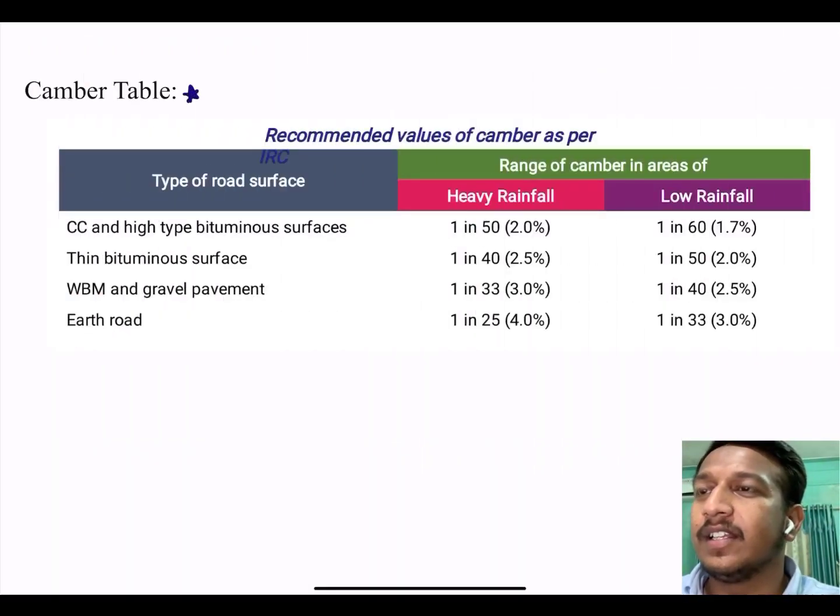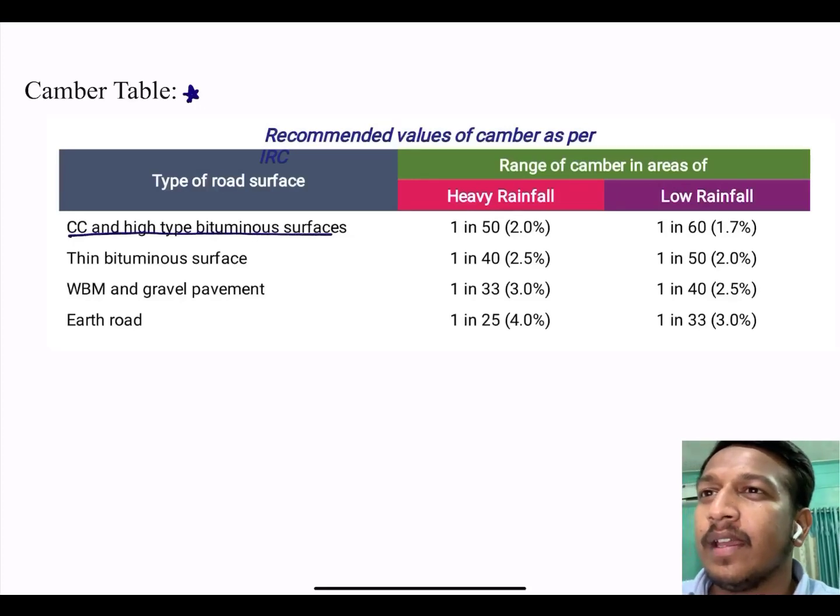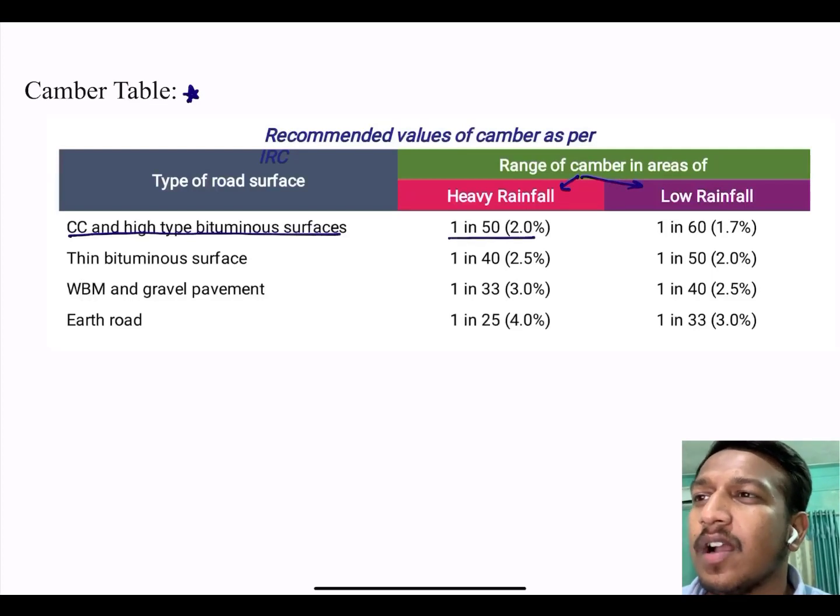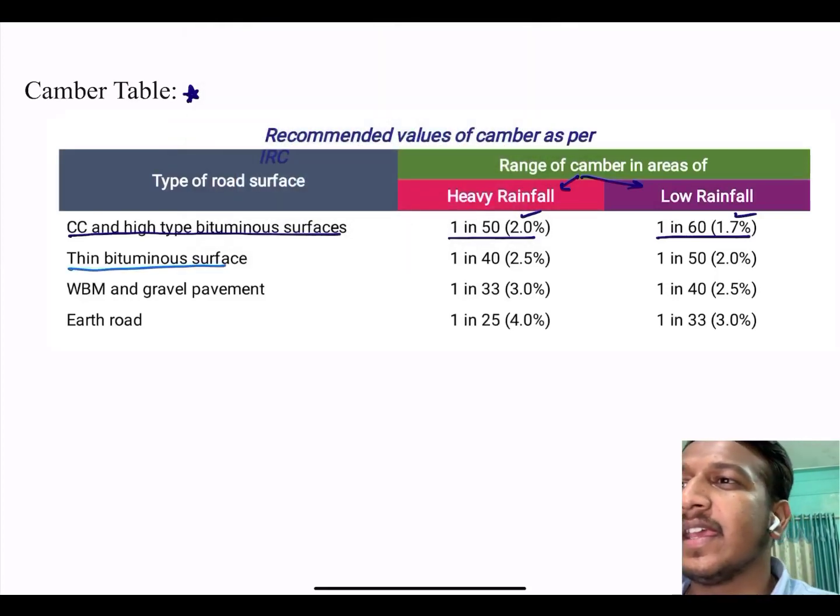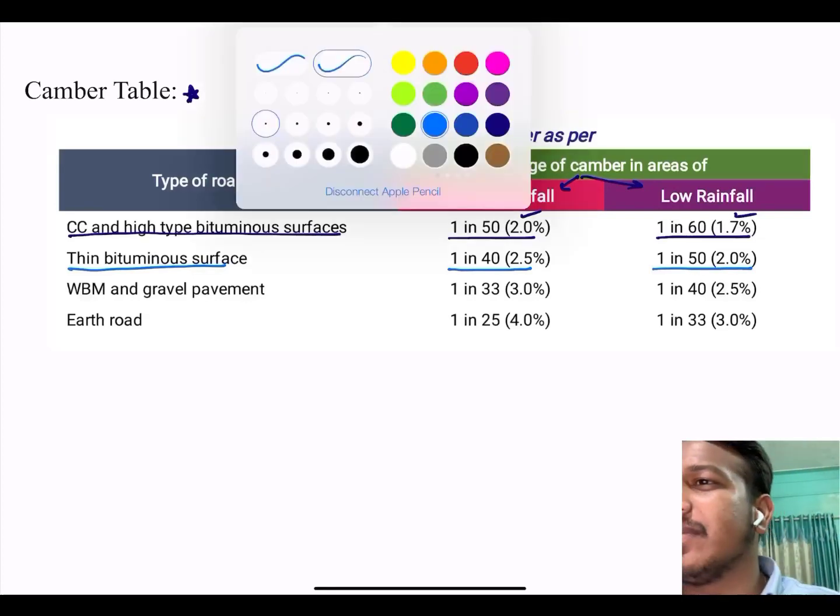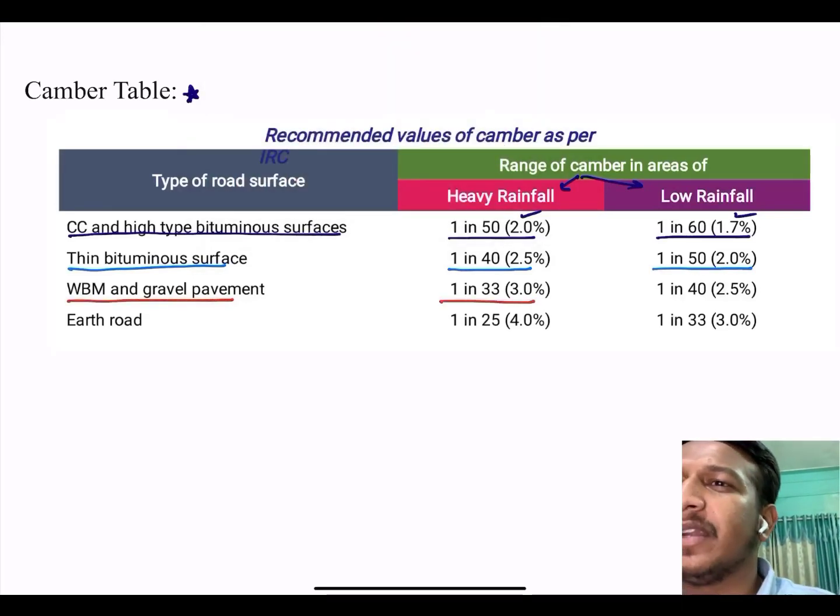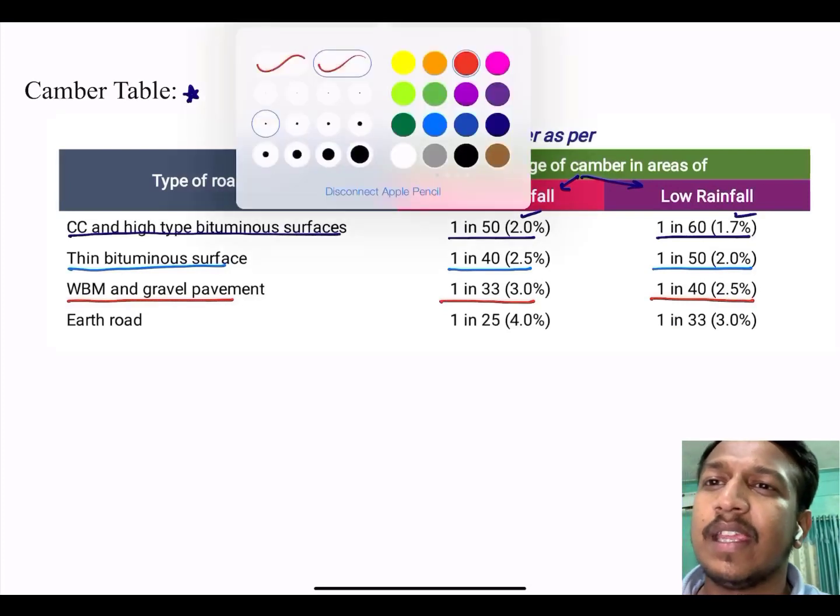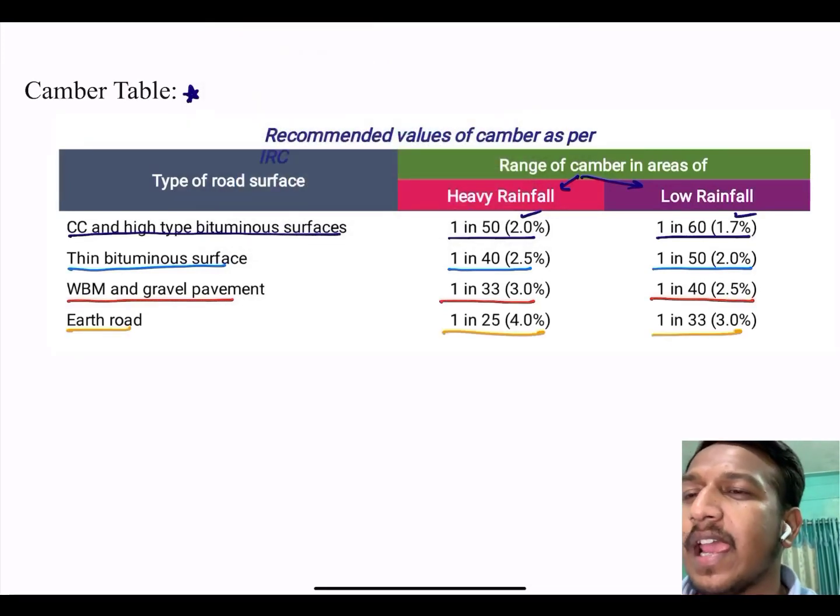Camber table which is very important. Static question comes from here. Recommended value of the camber: cement concrete and high type bituminous, for heavy rainfall 1 in 50, low is 1 in 60. Thin bituminous surface 1 in 40, 1 in 50. Water-bound macadam or gravel pavement is 1 in 33 and 1 in 40. And earthen road is 1 in 25 and 1 in 33.